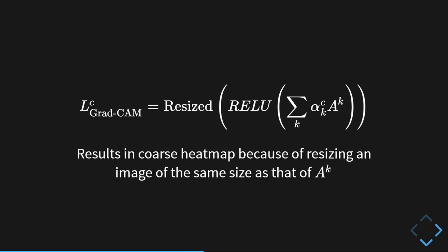After obtaining these importance weights, we take a weighted combination of all the feature maps. We then pass it through a ReLU for reasons which I'll explain soon. And then we get an image that is of the same size as that of these feature maps. So we need to resize that image to get heatmap for the original image. This is where the low resolution of GradCAM comes in. So it results in coarse heatmap because of resizing an image of the same size as that of AK.